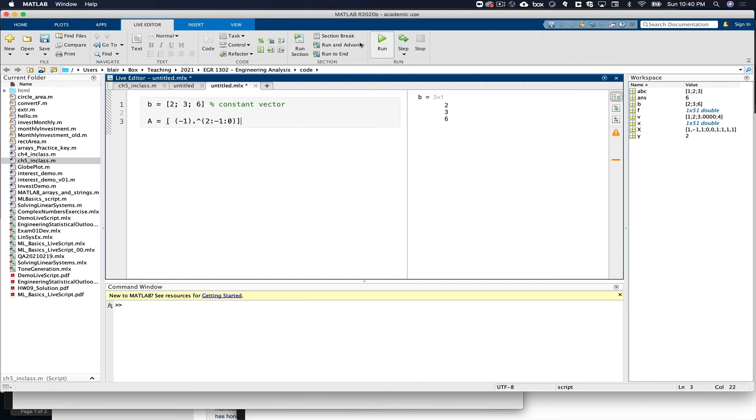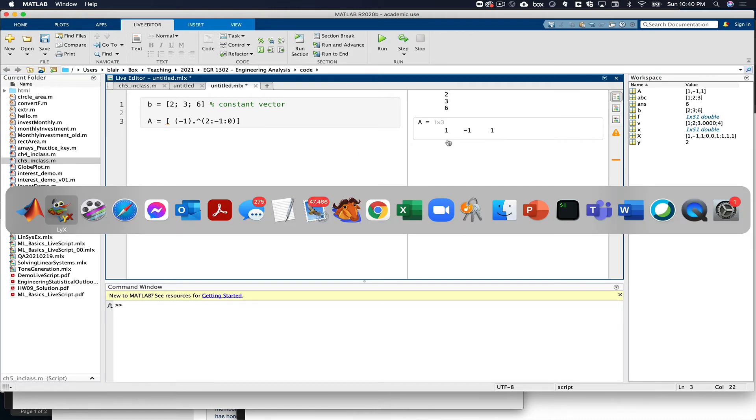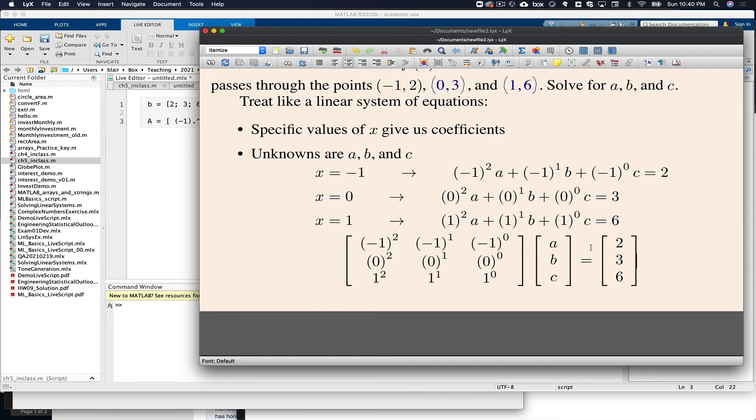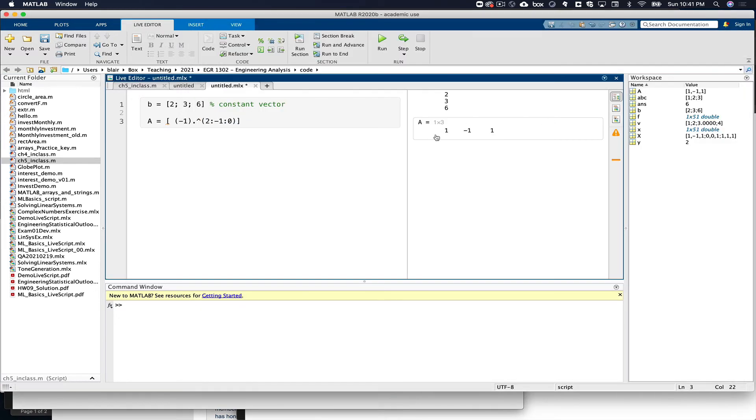Watch what happens if I run this. Notice that's just like this line here, negative 1 squared is just 1, and then negative 1 and 1. So there's that.